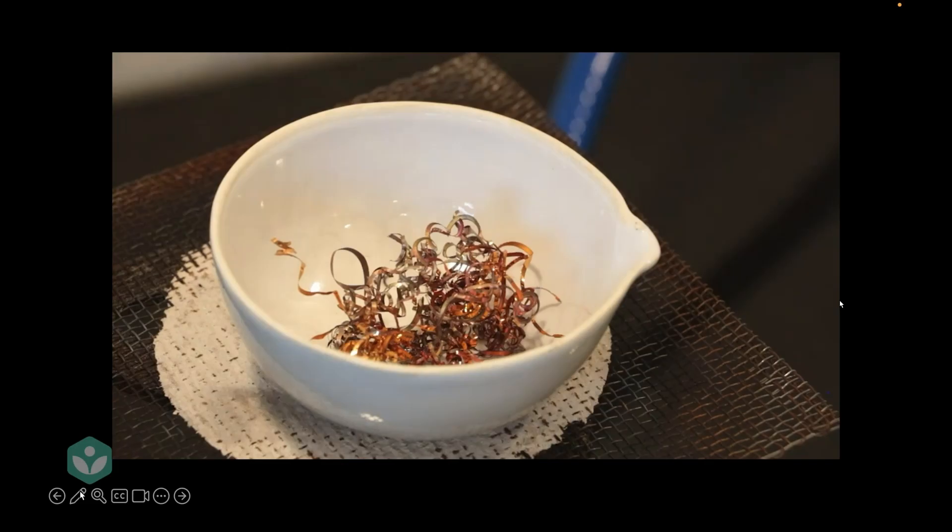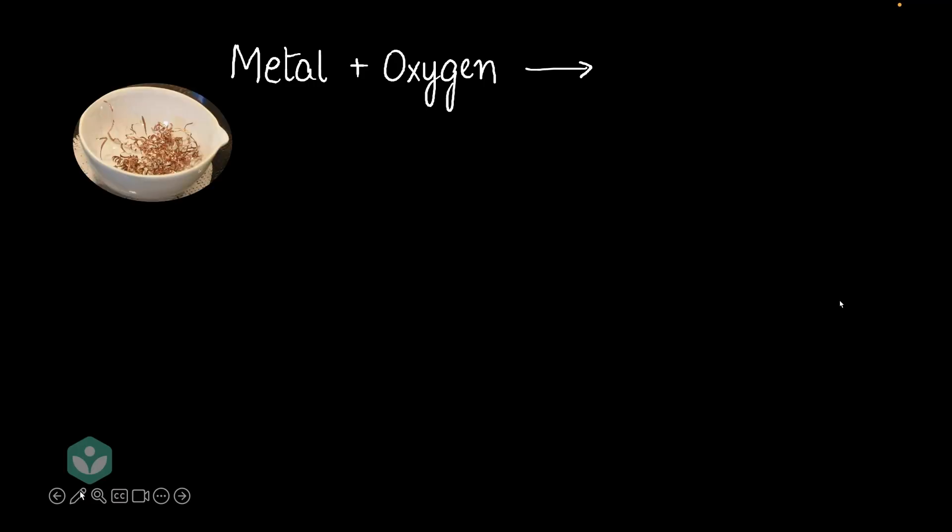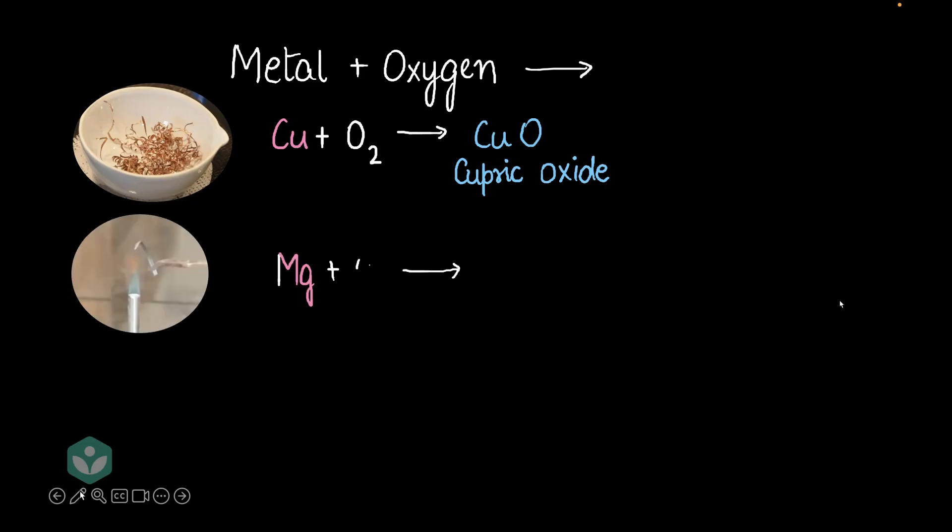Okay, let's begin with asking what exactly is happening. Metals are reacting with oxygen in those two videos. So, let's take the example of copper. Copper reacted with oxygen to give copper oxide, here what we call as cupric oxide. Magnesium reacted with oxygen to give magnesium oxide. Let me just balance that equation.